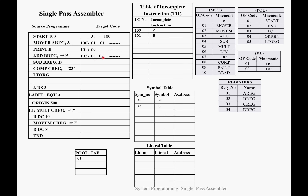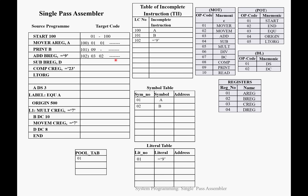Next is ADD BREG, =9. ADD is at third position in MOT, BREG is at second position in the register table, and =9 is a literal — we don't know its address, so we add this literal into the literal table at the first position and add LC 102 with incomplete instruction =9 into the TII. Next is SUB BREG, D at location 103. SUB is at position 04 in MOT, BREG is at position 2. D is a new symbol — we don't know the address, so we add D to the symbol table and TII at location 103.